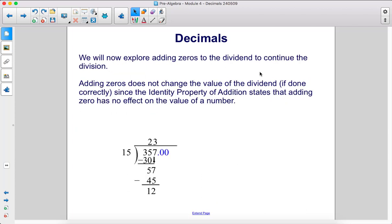We will now explore adding zeros to the dividend to continue the division. Adding zeros does not change the value of the dividend, if done correctly, since the identity property of addition states that adding zero has no effect on the value of a number.